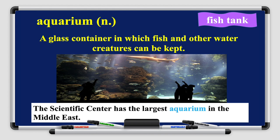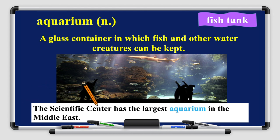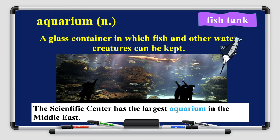The next word is 'aquarium' — it's a noun. It means a glass container in which fish and other water creatures can be kept. In the purple flag on the right you can see its synonym: 'fish tank' — fish tank and aquarium are synonyms, they have almost the same meaning. The scientific center has the largest aquarium in the Middle East. You can see the picture here — people go there to see fish. It's really exciting!